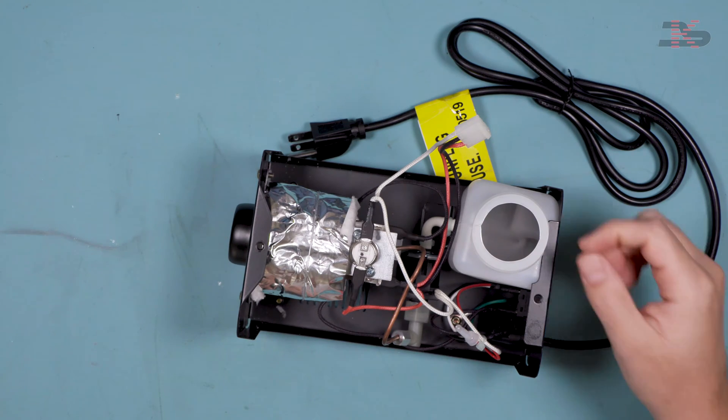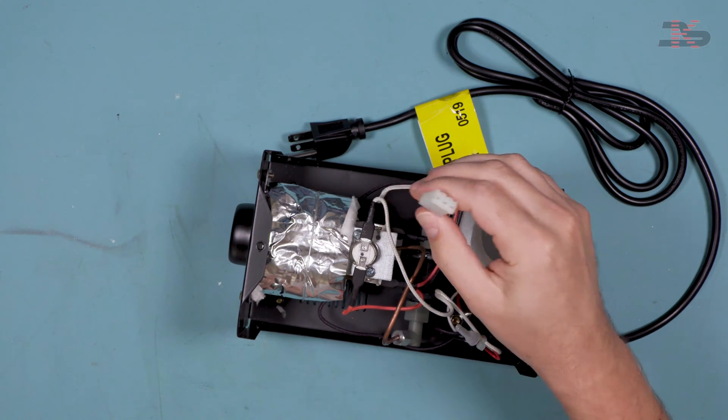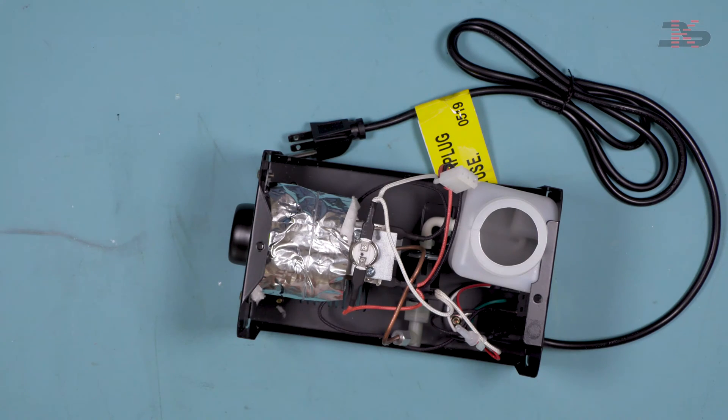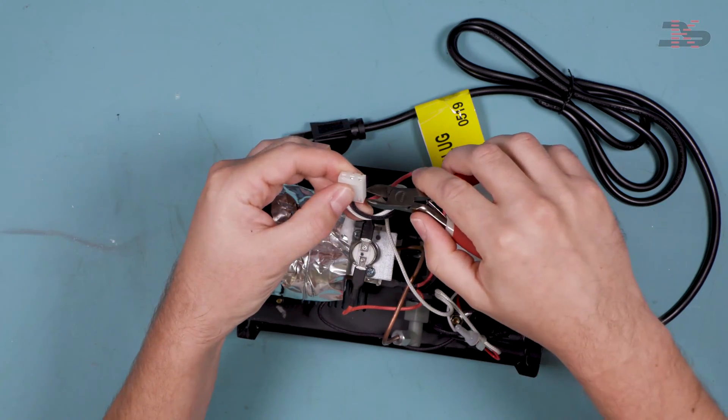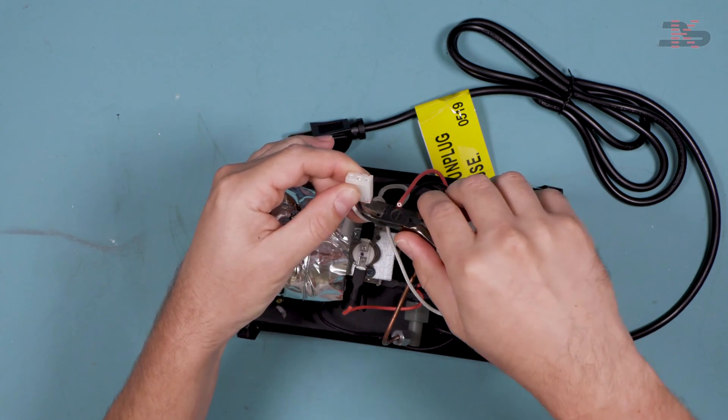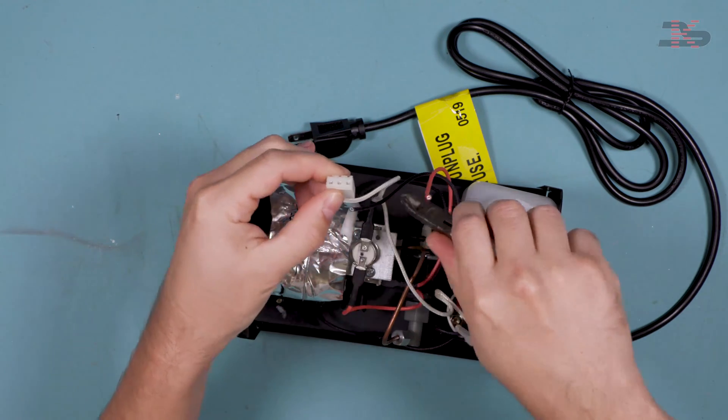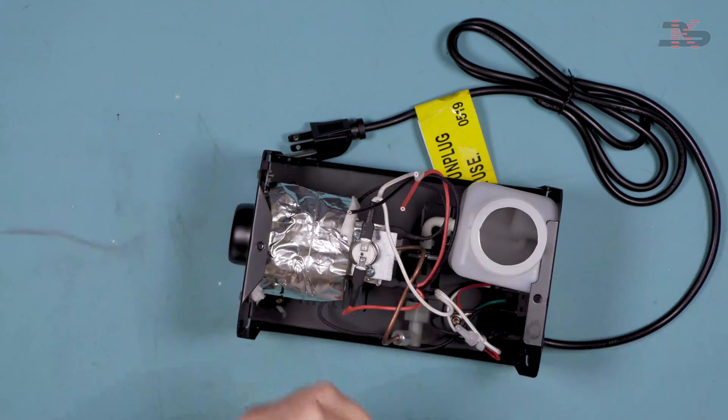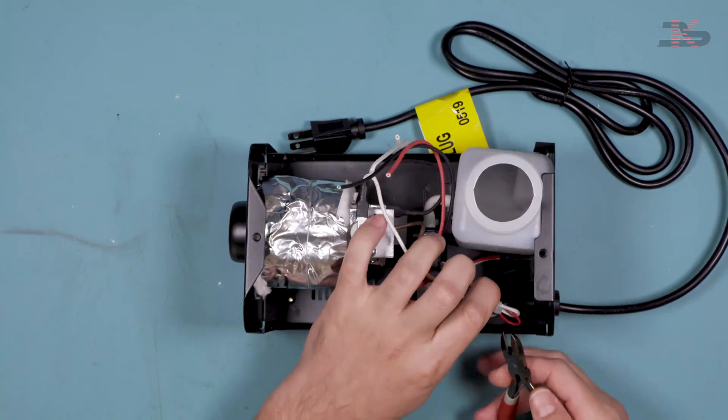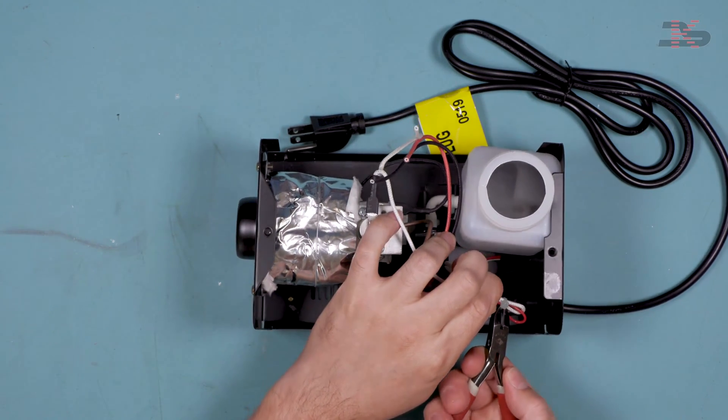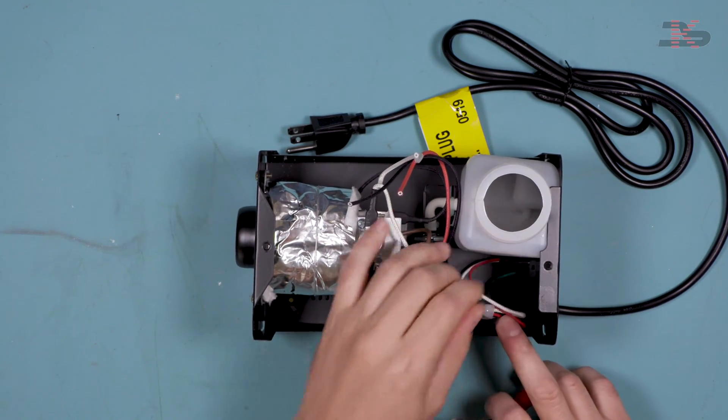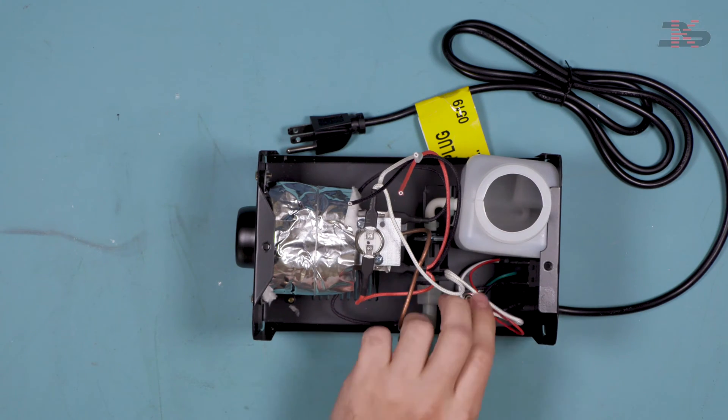So basically the first thing to do is we're going to get rid of this connector because we will no longer need that. So just cut these wires off and put that aside.